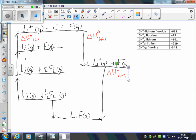F2 becoming an F atom is atomization of fluorine. Elements forming a compound - that's enthalpy of formation.